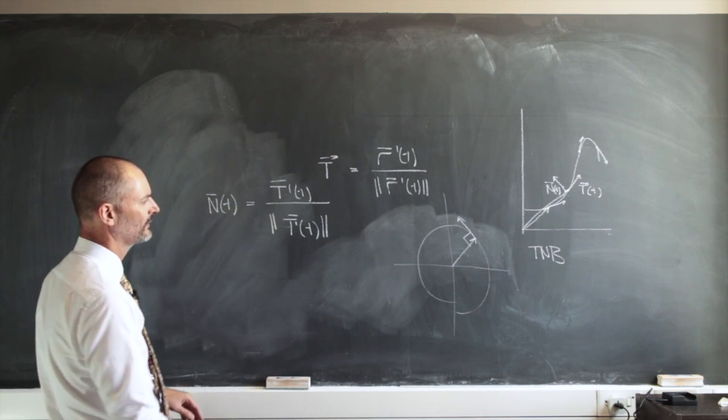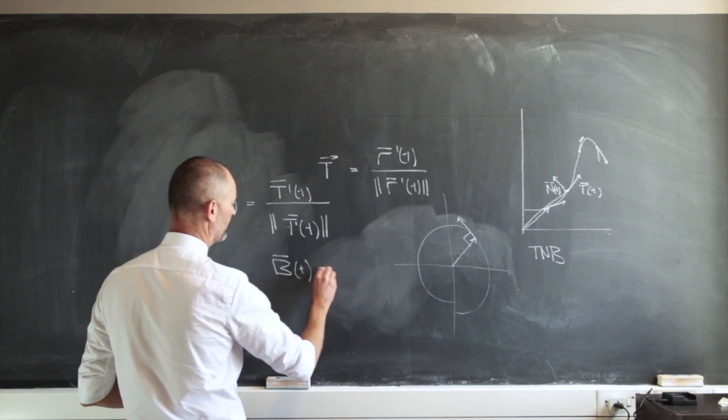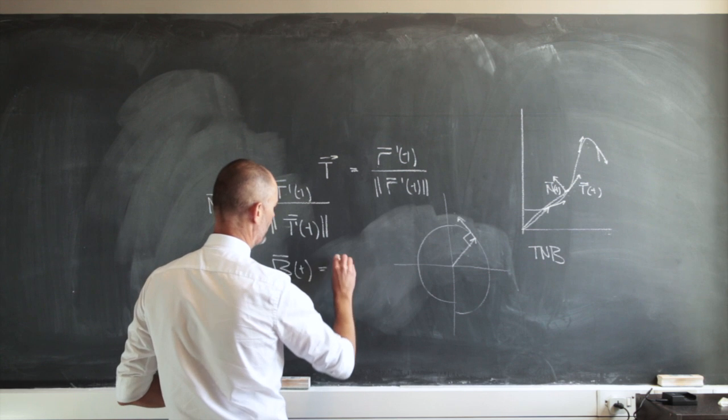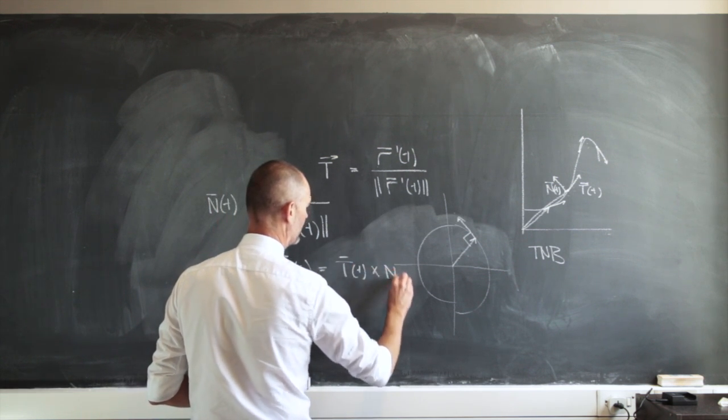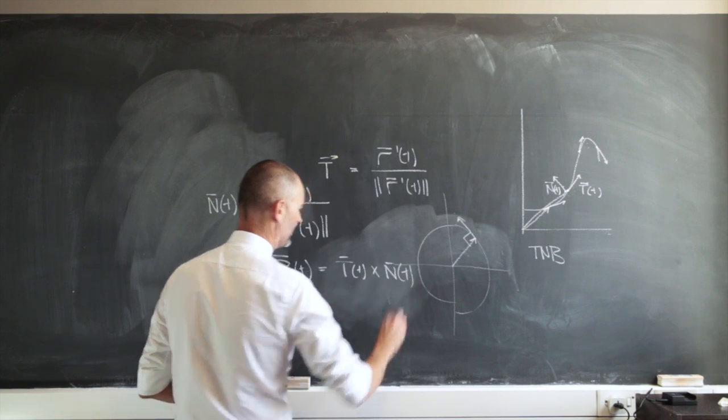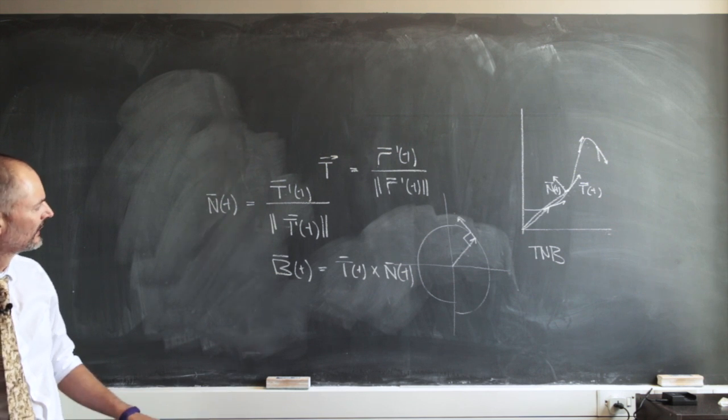And then we have this binormal unit vector B that you just have to know about. And that is just the cross product of these two vectors. So nothing here is too difficult.